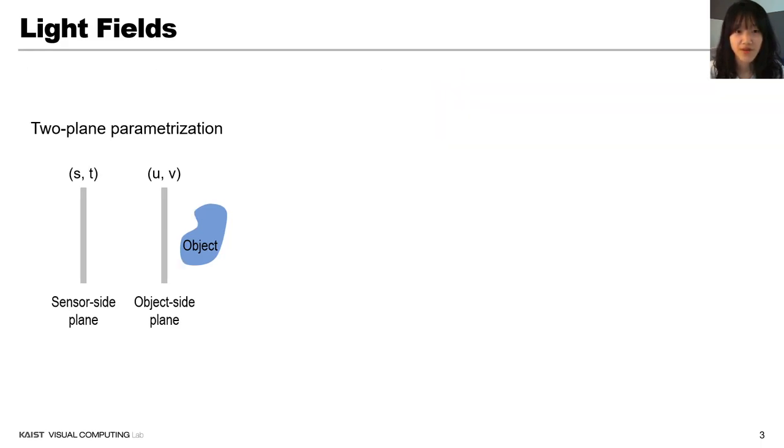As light fields being high dimensional, it is popular to parameterize light fields with a two-plane coordinate system. A light ray can be represented by a pair of the coordinate in the sensor-side plane ST and the coordinate in the object-side plane UV, and this can be used to represent each light ray.